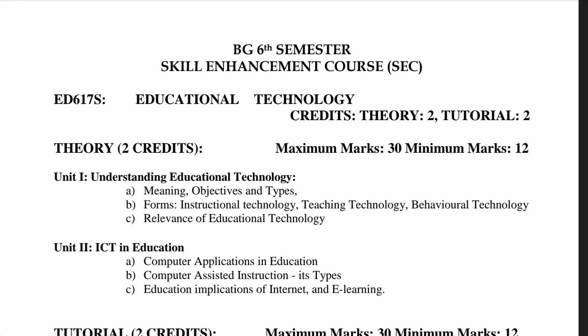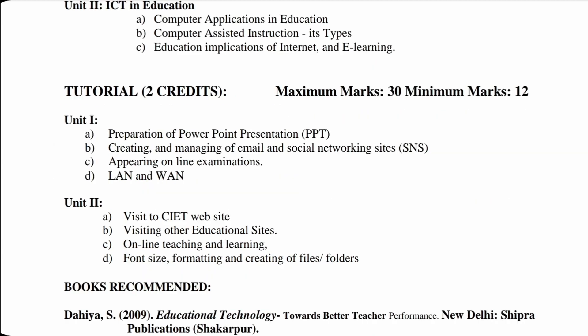Unit 1 also covers C: relevance of educational technology. Unit 2 is 'ICT in Education', covering A: computer applications in education; B: computer assisted instruction and its types; C: educational implications of internet and e-learning. The tutorial portion credit is 2, maximum marks 30, minimum marks 12. Unit 1 covers: A: preparation of PowerPoint presentation (PPT); B: creating and managing email and social networking sites (SNS); C: appearing for online examinations; and local area network and wide area network. Unit 2 covers: A: visit to CIET website; B: visiting other educational sites; C: online teaching and learning; D: file size, formatting and creating of files or folders.